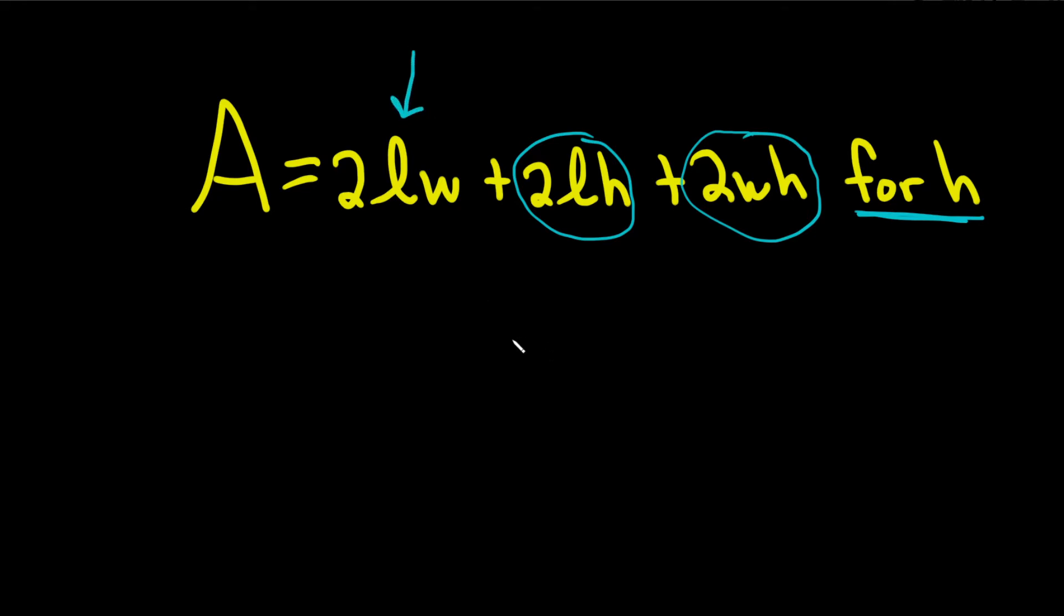A good first step is going to be to get all of the terms with H's on one side by themselves. So we're going to get rid of this 2LW. This is a positive 2LW, so to get rid of it, we'll subtract it from both sides.